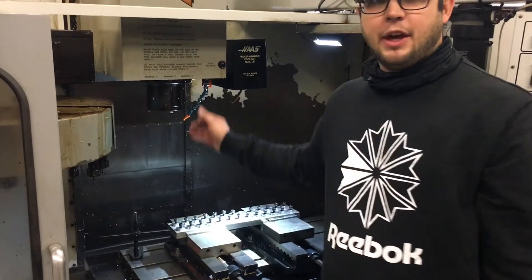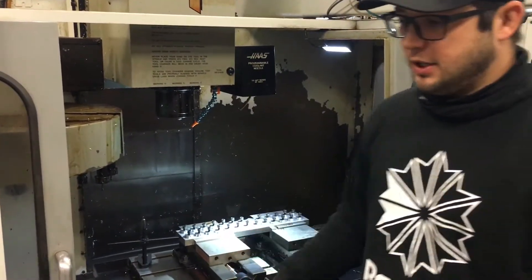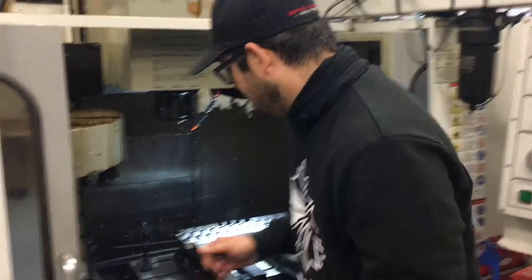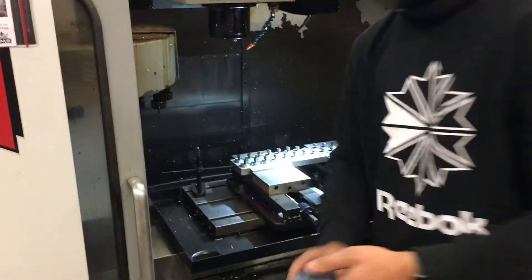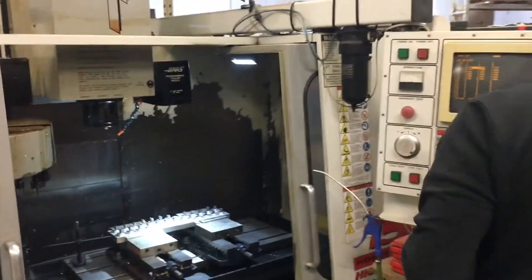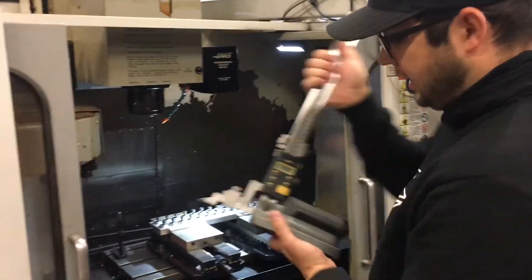Now, Z on this because it's a through hole isn't super critical, right? You can be plus or minus a couple thousand because it's a through hole and it's a tap. So what we're going to do is make sure the table's clean here. Let's grab our height gauge.